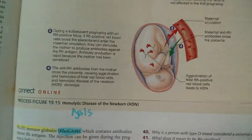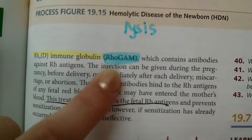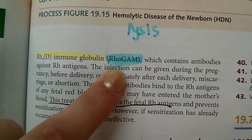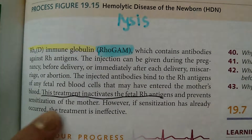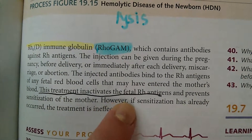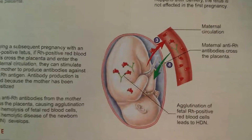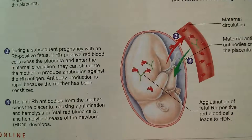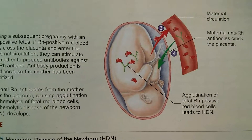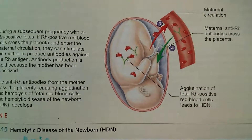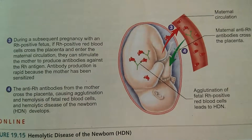Doctors have figured out something they can do to prevent this from happening. They give an injection of what's called RhoGAM to the mother, which inactivates the Rh antigens so that the mother's antibodies don't end up attacking the baby. So this is what the Rh factor is, and this is how it works with hemolytic disease of the newborn.